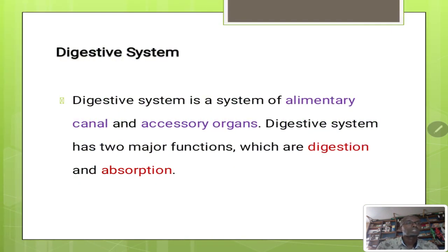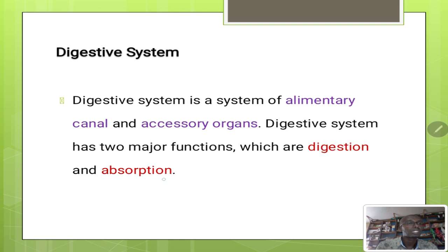The digestive system is a system of the alimentary canal and accessory organs. So the digestive system contains two main parts: the alimentary canal and the accessory organs. The digestive system has two main functions: digestion — breaking down food into smaller soluble ones — and then absorption. The reason why we digest food into smaller soluble ones is so it can be absorbed by the body and the blood.